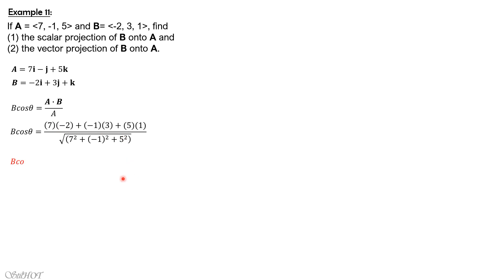So computing the values using your calculator, b cosine theta is -4 square root of 3 over 5. So it is negative. Remember that's a scalar.